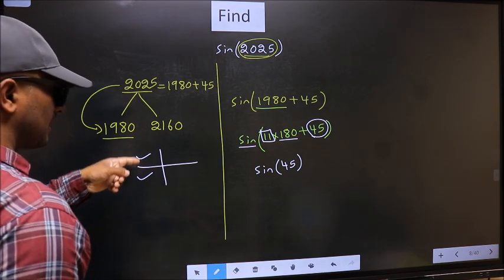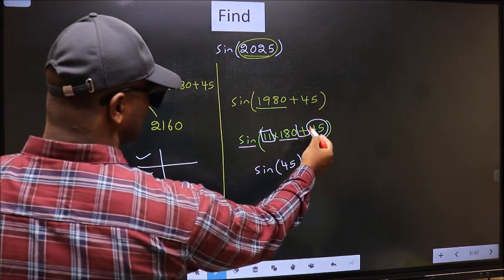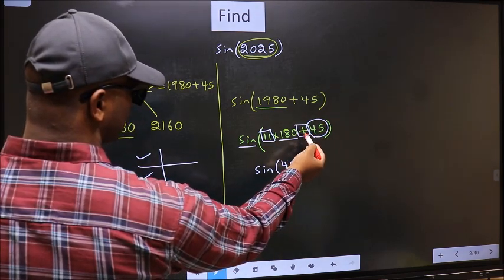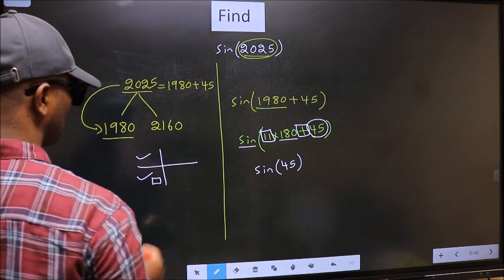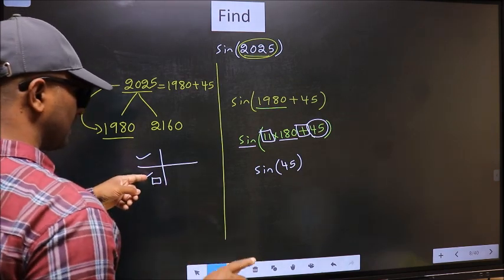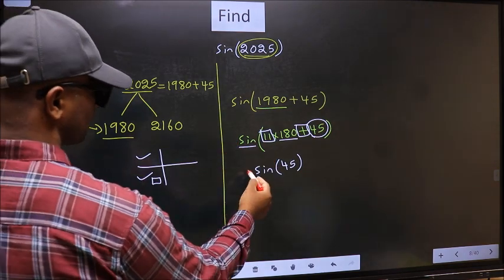So now to select the quadrant, we should look at this symbol. Here we have plus, that means the angle lies in the third quadrant. And in the third quadrant, sine is negative. So we should put negative.